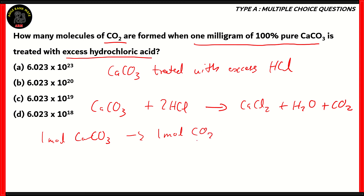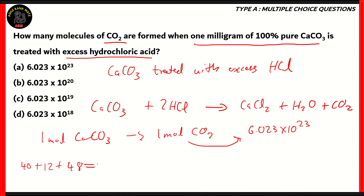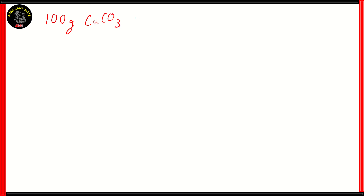1 mol of CO₂ is the same as 6.023 × 10²³ molecules. Now, calcium carbonate: calcium has an atomic mass of 40, carbon has 12, and 3 oxygen atoms together give a mass of 48. 48 + 12 is 60, and 60 + 40 gives you 100. So therefore, 100 grams of CaCO₃ will give you 6.023 × 10²³ molecules of CO₂.